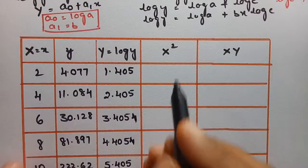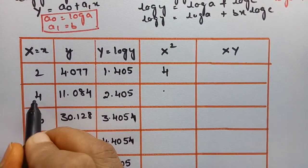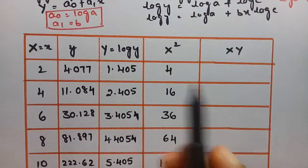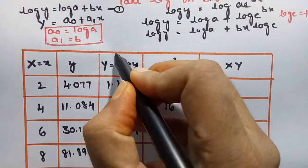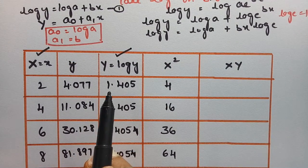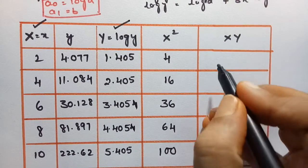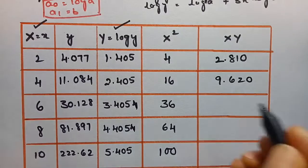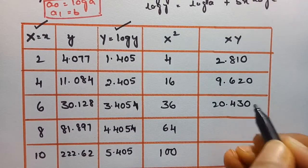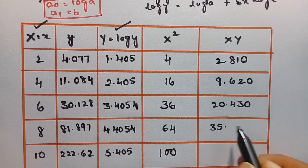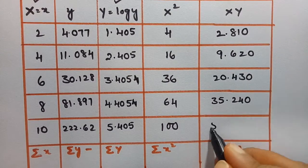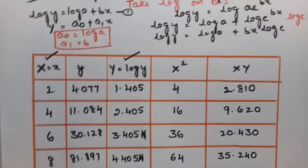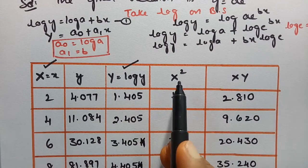Next, the x² values: 2²=4, 4²=16, 6²=36, 8²=64, 10²=100. Then we multiply x·Y (x times capital Y): 2×1.405 = 2.810; 4×2.405 = 9.620; 6×3.405 = 20.430; 8×4.405 = 35.240; and 10×5.405 = 54.050.